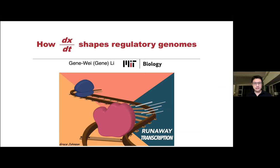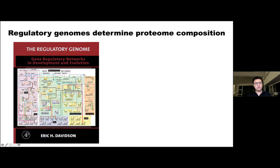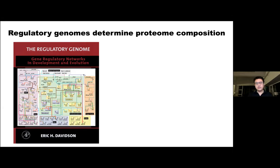Today I'm really excited to talk about our recent work on how the speed of a molecular motor — in this case, the RNA polymerase — can dramatically redefine the regulatory genome of a cell. I use this term 'regulatory genome,' borrowed from the late Eric Davidson from Caltech, to describe the DNA elements in a genome that regulate gene expression. The output of the regulatory genome is not just a binary on/off switch, but rather graded levels of protein production spanning many orders of magnitude.